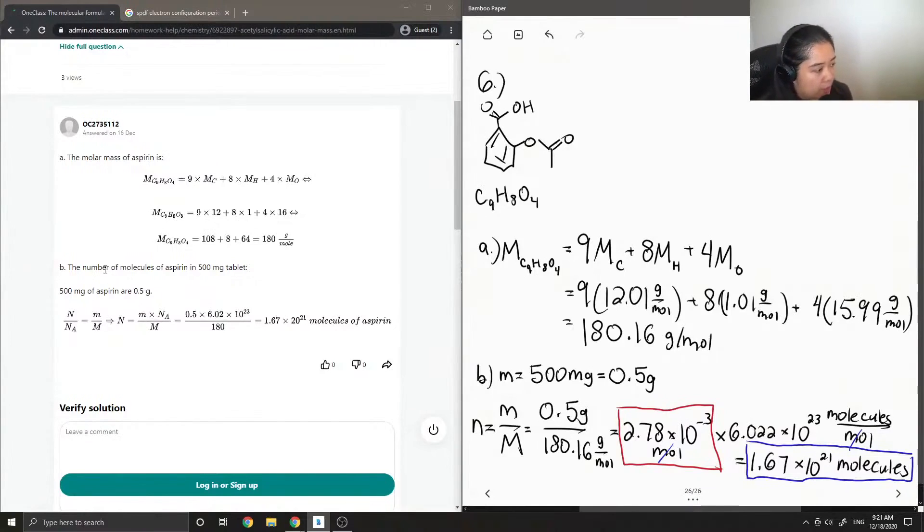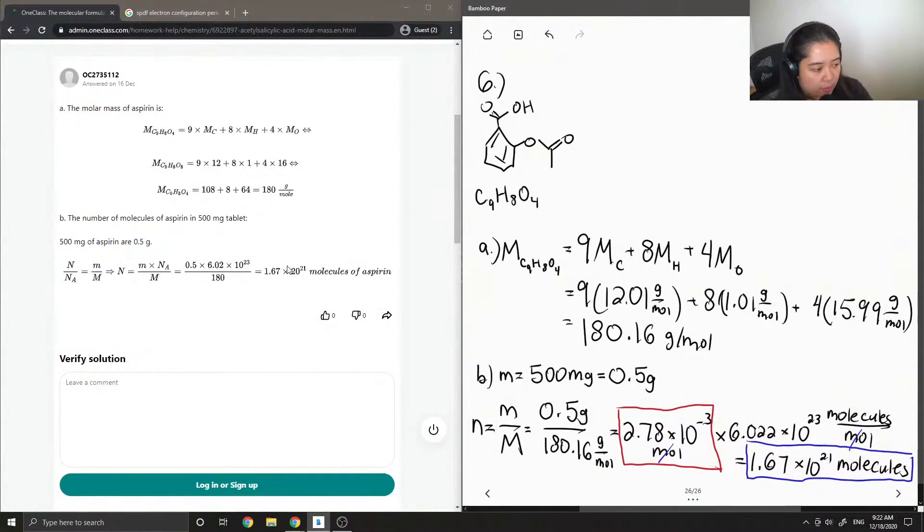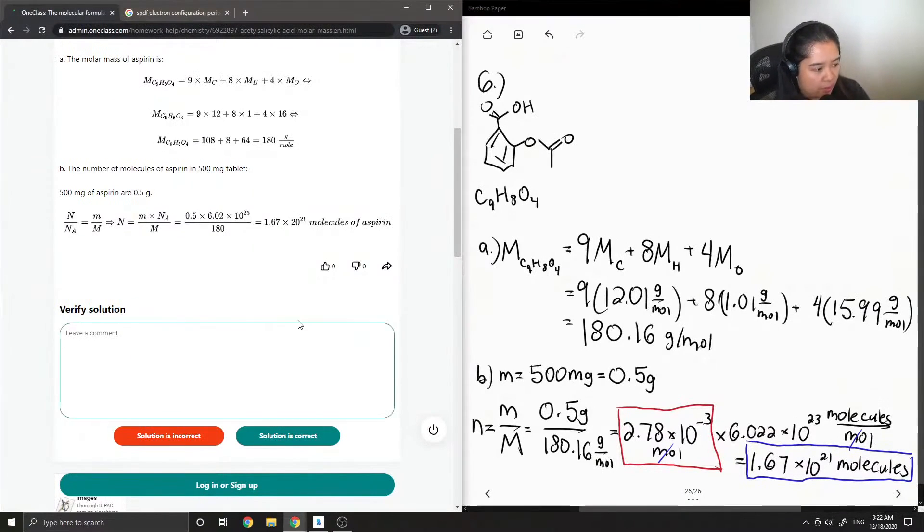The number of molecules of aspirin in a 500 milligram tablet. So they show that it is number of moles divided by Avogadro's number, equal mass over molar mass. Okay, so now they just did the 0.5 times 6.02 times 10 to the 24 divided by 180. And they also got 1.67 times, I think they meant 10 to the 21 molecules of aspirin.